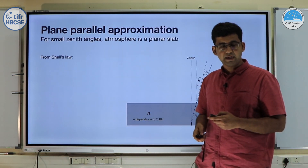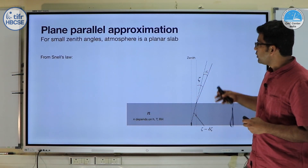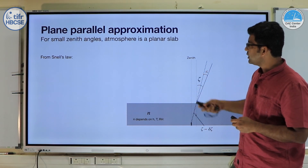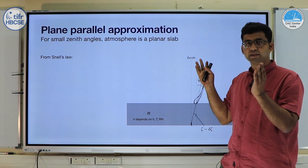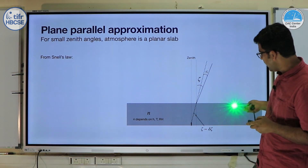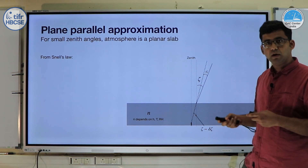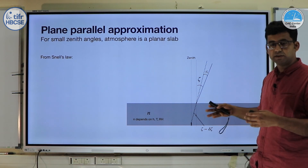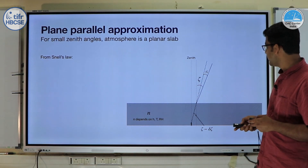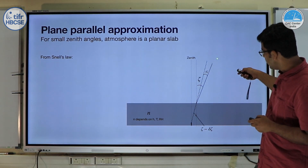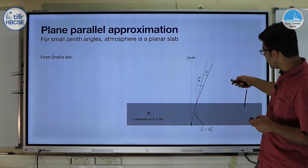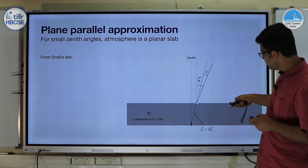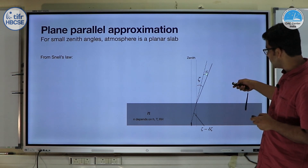Let us calculate how much that effect is. We are going to use the plane-parallel approximation, in which we only consider stars at small zenith angles. The atmosphere is approximated as a slab of parallel medium with some refractive index n, which depends on temperature, relative humidity, and so on. We say that the starlight is entering at some actual zenith angle ζ and it gets bent by a small angle δζ.